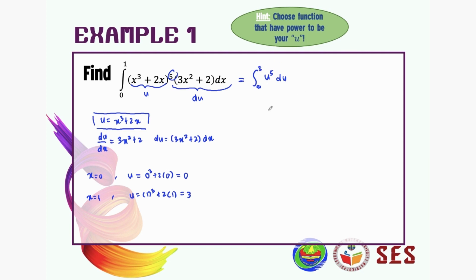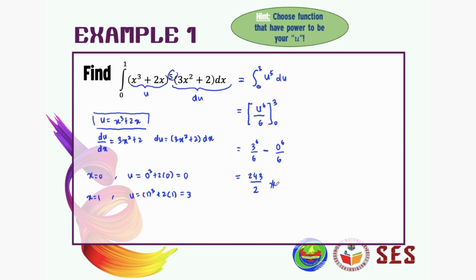So the integral becomes u to the power of 6 divided by 6, evaluated from 0 to 3. Substituting the upper limit first: 3 to the power of 6 divided by 6, minus 0 to the power of 6 divided by 6, which equals 243 divided by 2.